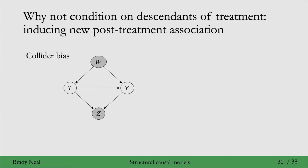Another reason is that we might induce new post-treatment association. So in this graph, if we condition on z, then because z is a collider, we will induce new association between t and y that is not causal association. Because this non-causal association comes from a collider, this is commonly known as collider bias.